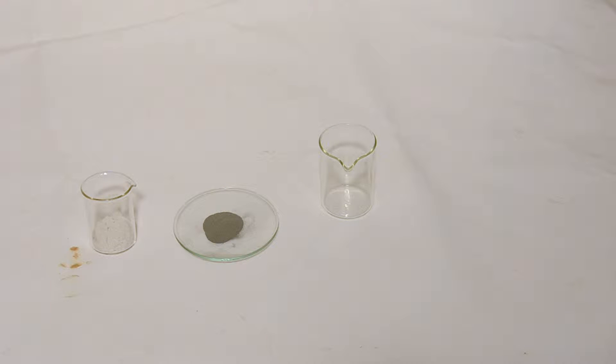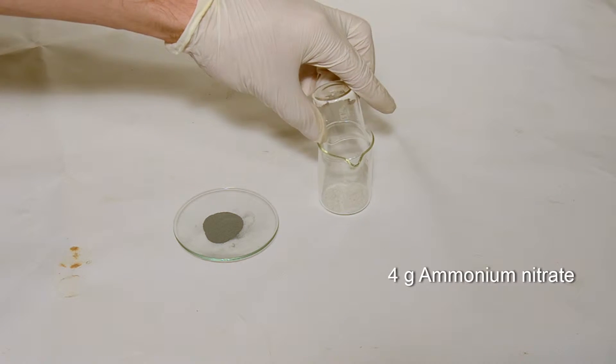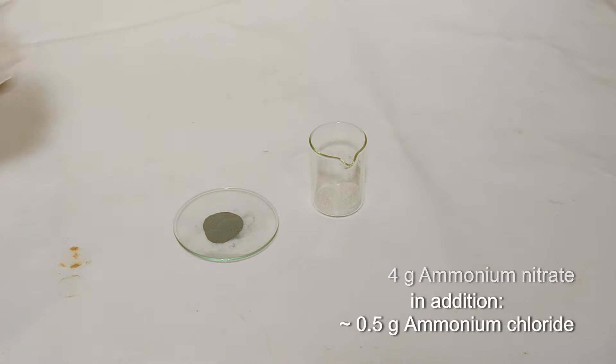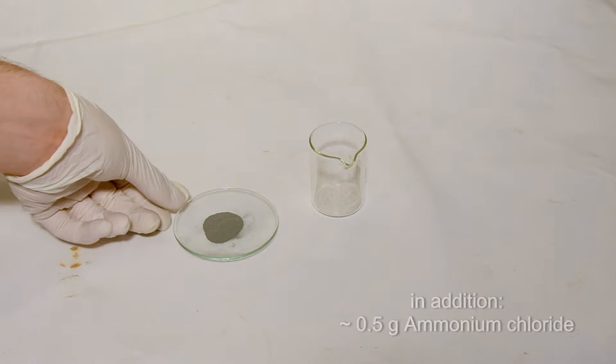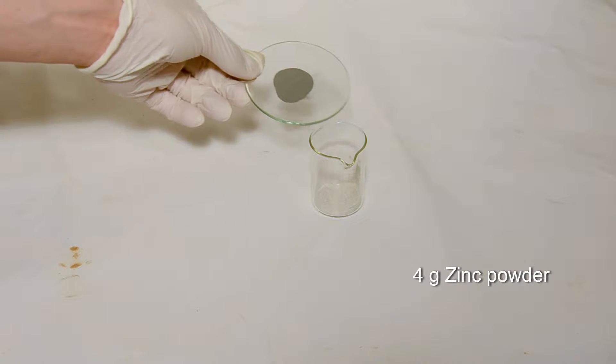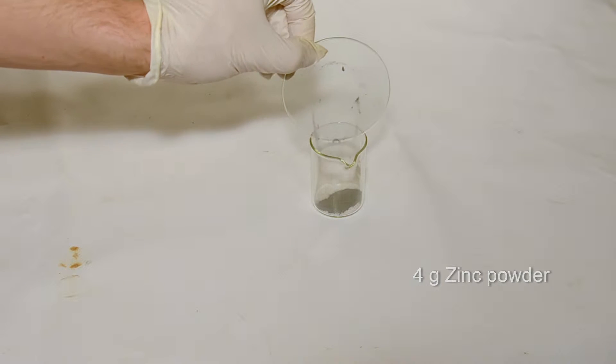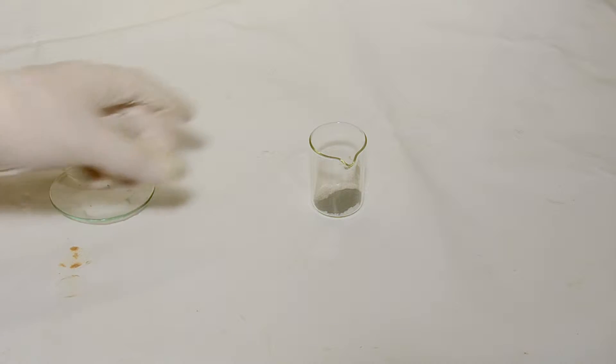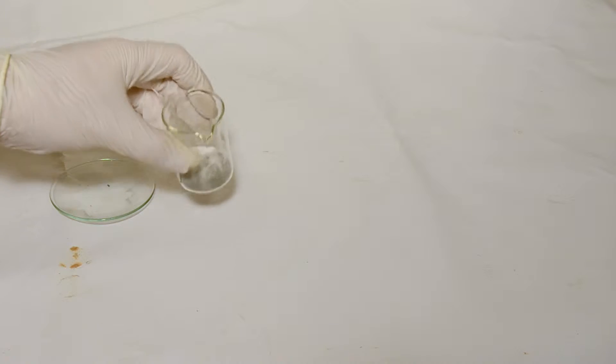Here you can see the first mixture we are using. For that, we need 4 grams of ammonium nitrate with half a gram of ammonium chloride mixed in it, and we add to that the equal amount of zinc powder. Then we mix them both together by shaking the beaker a little bit.